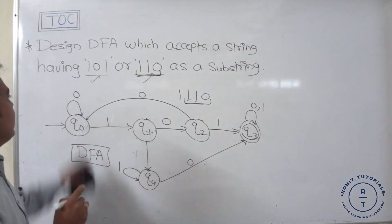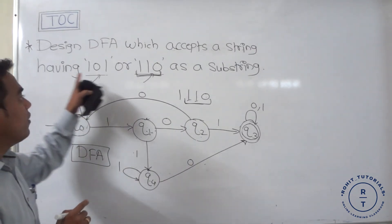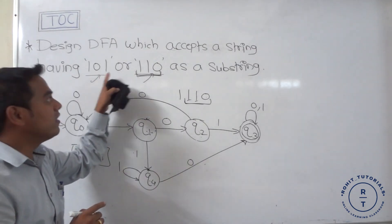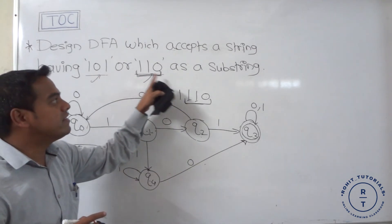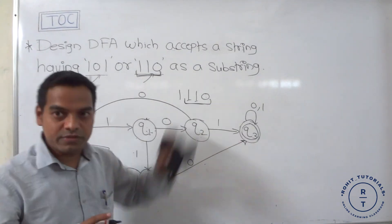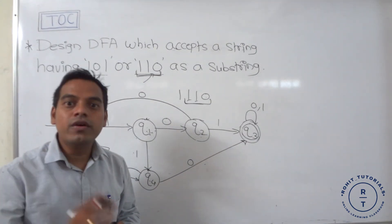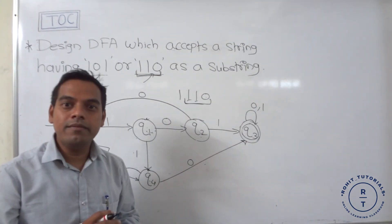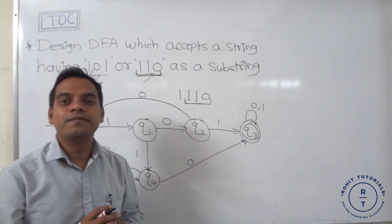The final DFA accepts strings having 101 or 110 as a substring. I hope you understood this problem. Thank you.